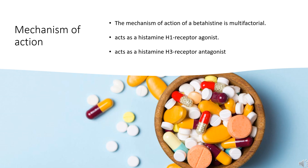Beta-histine is also purported to act by reducing the asymmetrical functioning of sensory vestibular organs and increasing vestibulocochlear blood flow, relieving symptoms of vertigo. In addition, beta-histine acts as a histamine H3 receptor antagonist, increasing the turnover of histamine from histaminergic nerve receptors, subsequently leading to an increase in H1 agonist activity. H3 receptor antagonism elevates levels of neurotransmitters, including serotonin in the brainstem, inhibiting the activity of vestibular nuclei, thus restoring proper balance and decreasing vertigo symptoms.